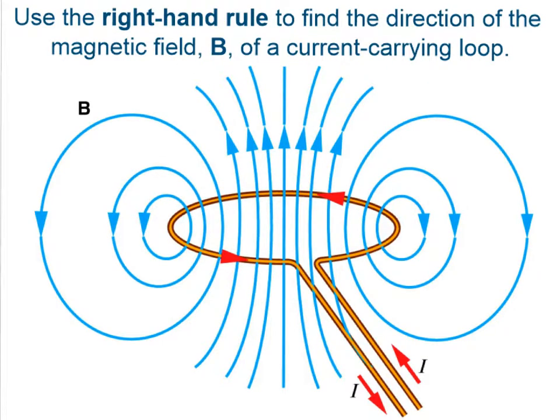You can use the right-hand rule to find the direction of the magnetic field of a current carrying loop. Let's say we have a wire and we form a loop out of it. You can see what is happening to the direction of the magnetic field. Pause the video and use your right hand, and you can see how these magnetic field lines accurately represent the direction of the magnetic field.